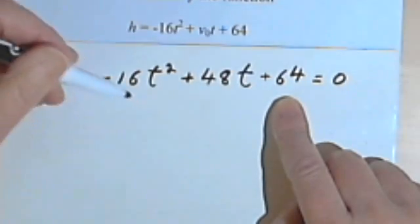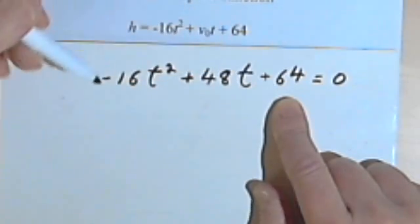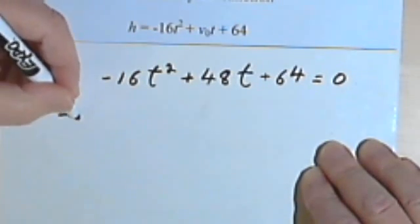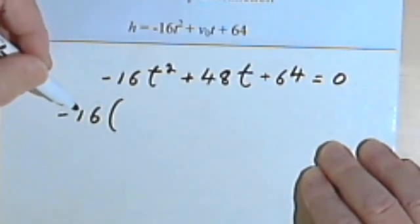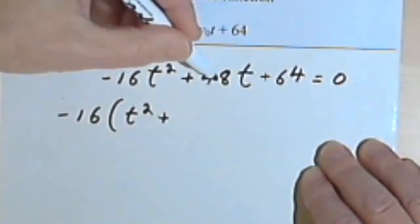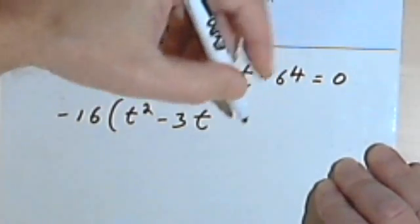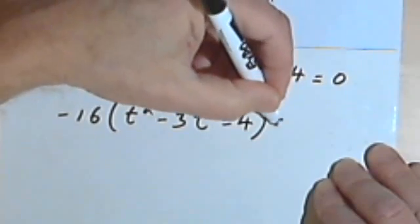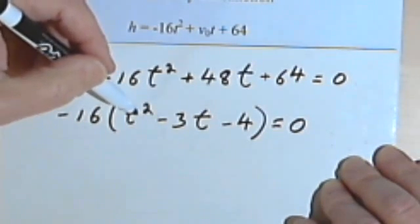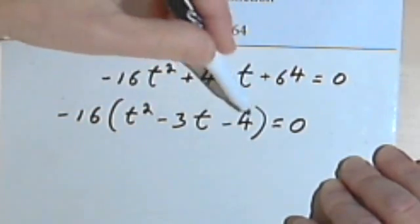All these numbers are divisible by 4. And if we go even further, we're going to see that we could divide a 16 into each of these numbers. So if we do that, we get a very simple equation. Let's divide by negative 16. We'll get this negative sign out of the way too. So if I divide all of this by negative 16, I'm going to have just a t-squared plus negative 16 into 48. That's negative 3t. And negative 16 into 64 is negative 4. So now all I've got is this negative 16, which I don't have to worry about. Times t-squared minus 3t minus 4 equals 0.